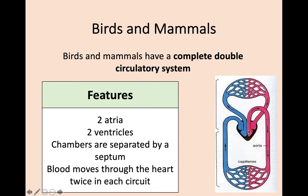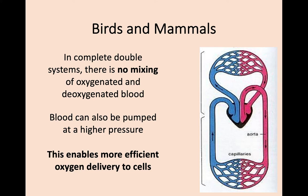Blood moves through the heart twice in each circuit. Deoxygenated blood — blood that has delivered its oxygen around the body — comes into the right atrium, then to the right ventricle, and gets sent to the lungs via the pulmonary artery to gain oxygen and release carbon dioxide. The blood becomes oxygenated, then travels back through the pulmonary vein into the left atrium, into the left ventricle, and is sent out through the aorta. This double pump system makes it a complete double circulatory system.